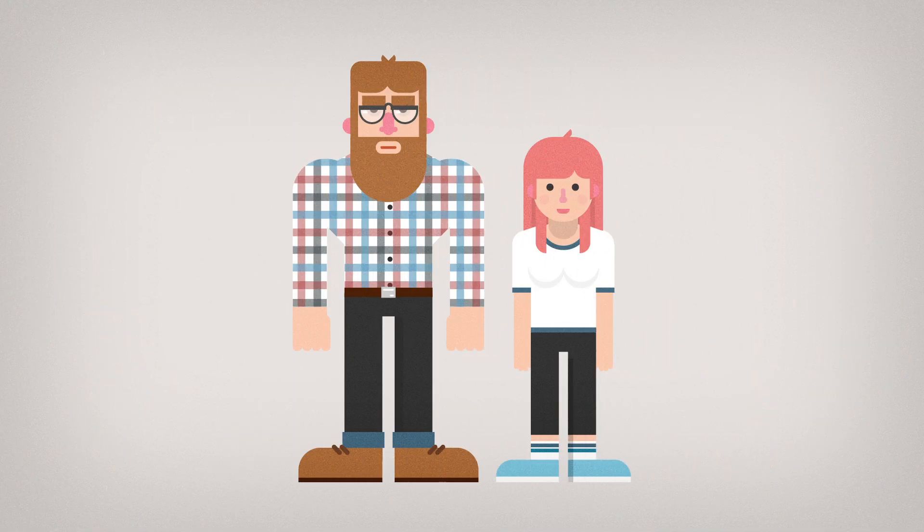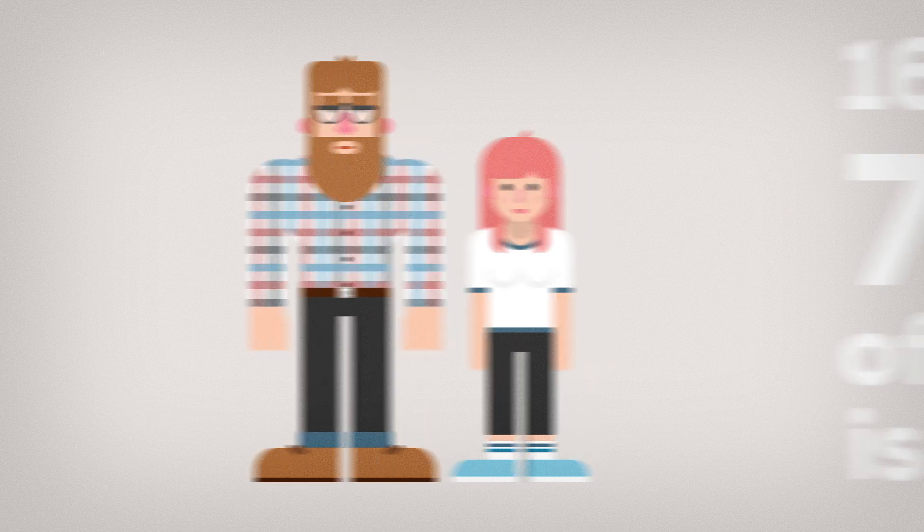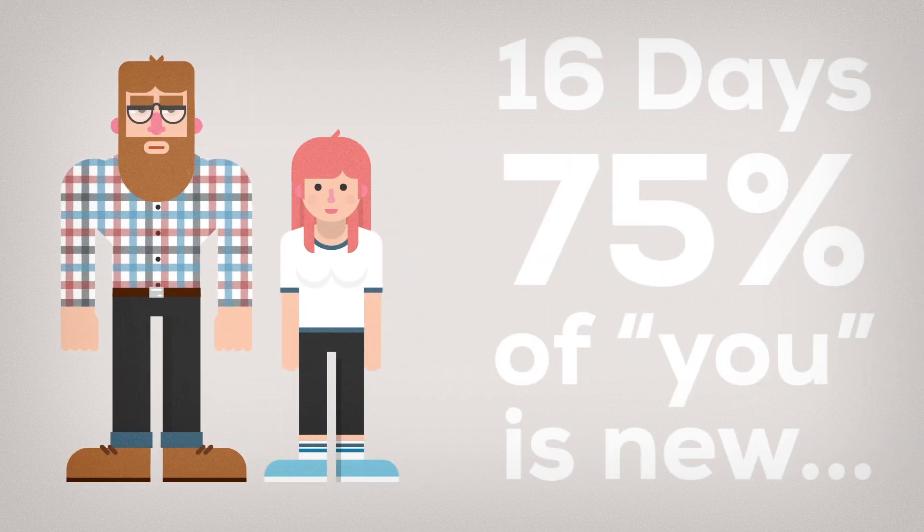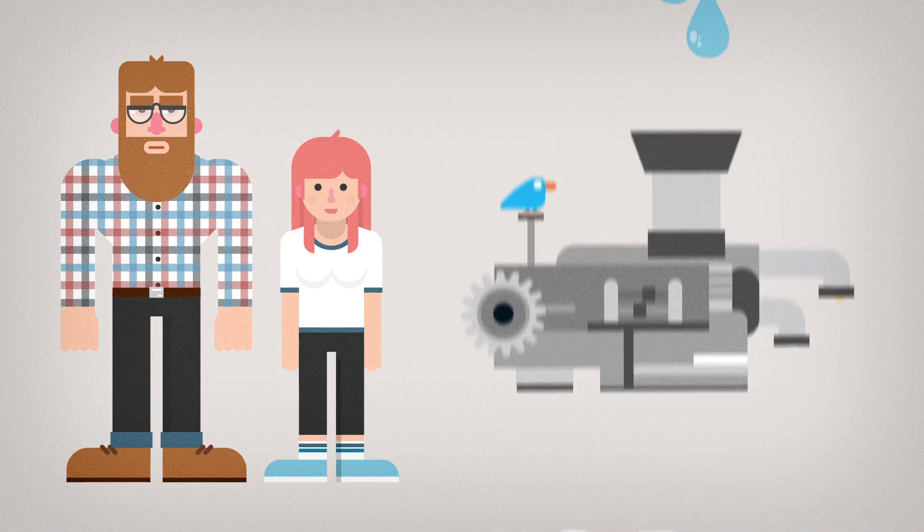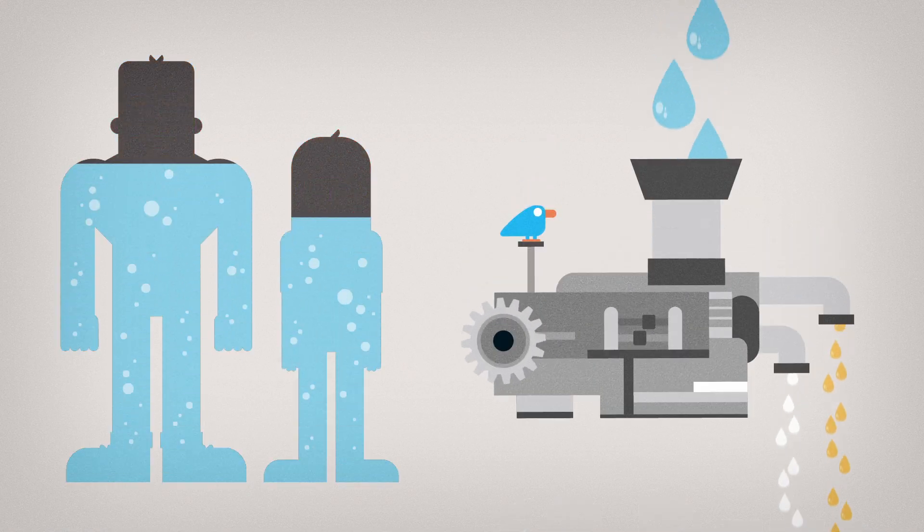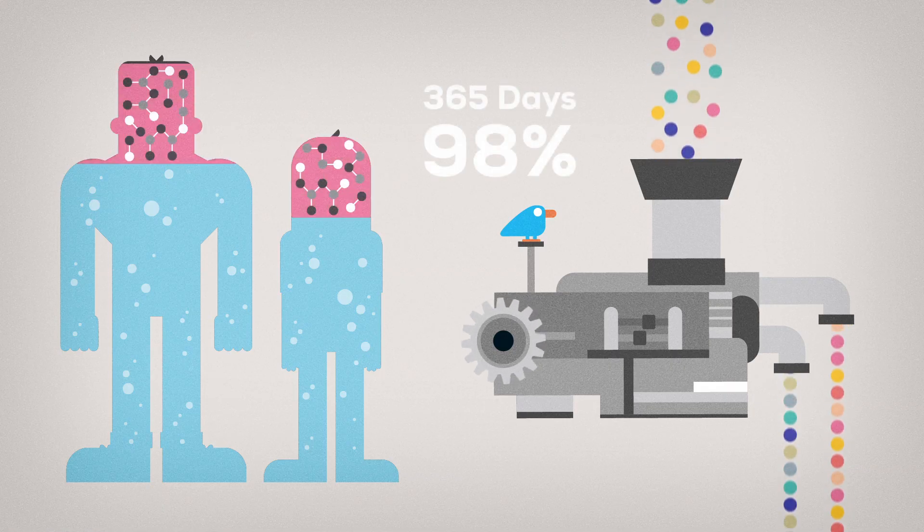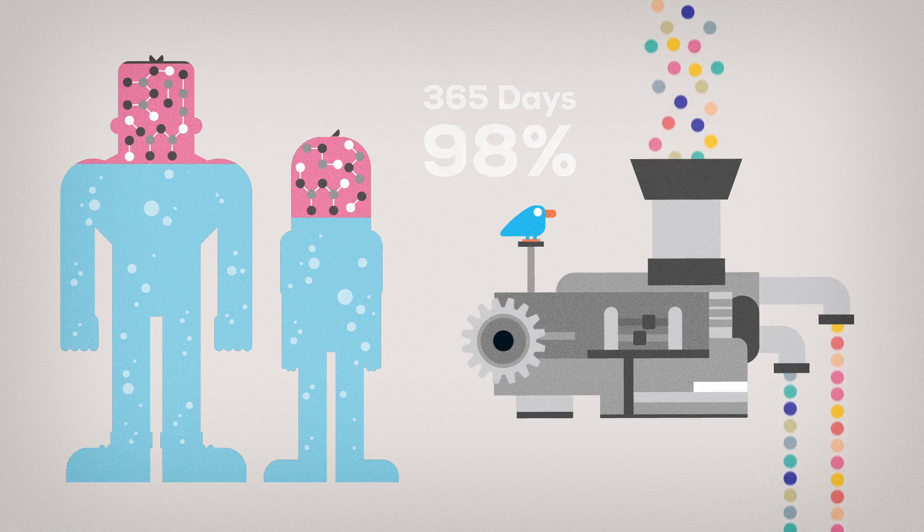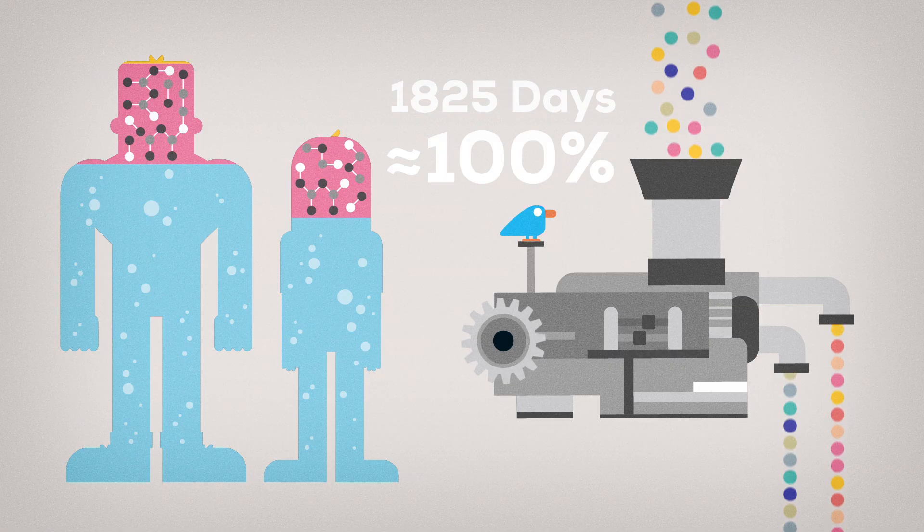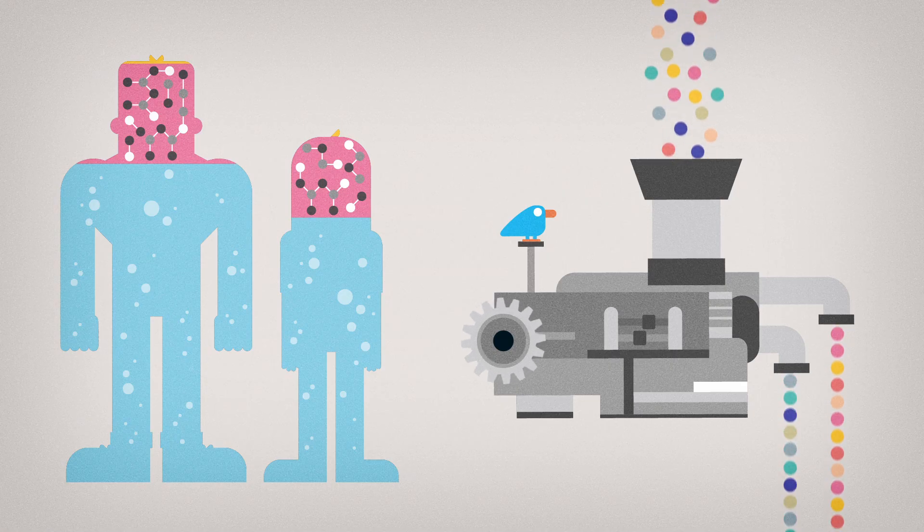Your body is in a constant state of transition. Every 16 days, 75% of you has been replaced because a healthy human exchanges about 100% of their water in that time period. Each year, about 98% of your atoms are replaced by new ones and every 5 years, close to all of the atoms that make up your body weren't there 5 years ago. So, you could call yourself a temporary collection of atoms.